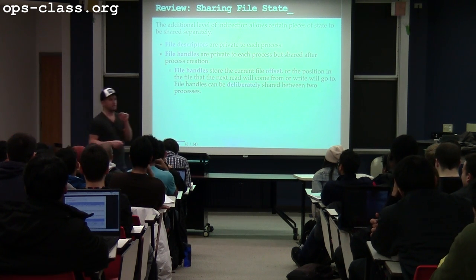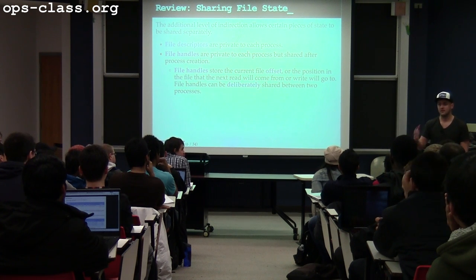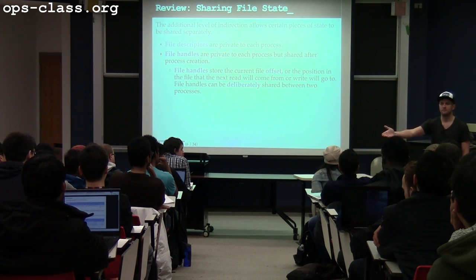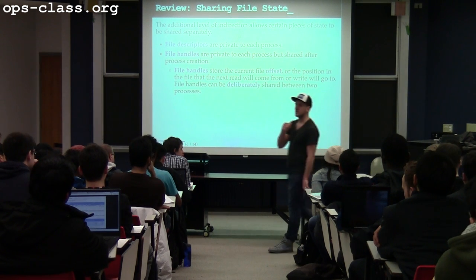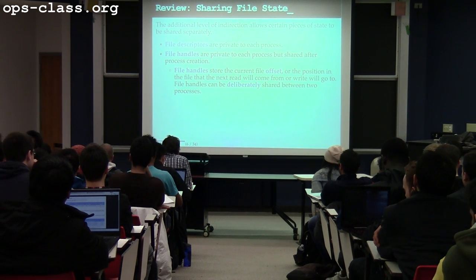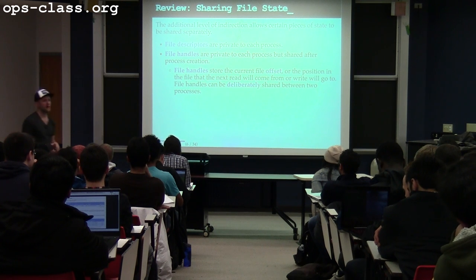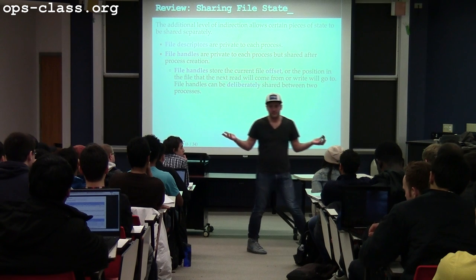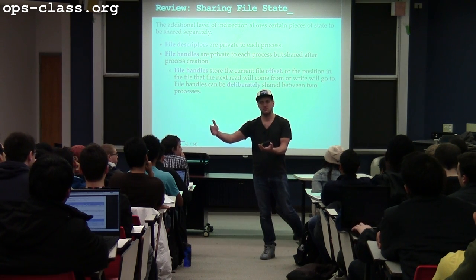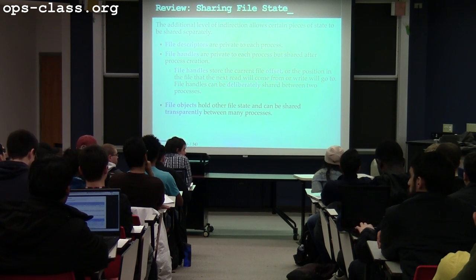There are ways to position the file pointer manually. You guys will work on this for Assignment 2. There's a system call called lseek, and lseek allows you to tell the kernel exactly where in the file you want your next file operation to go. If I want to read from or write to a particular byte of the file, I can use lseek to position the file pointer where I want it and then perform the operation. Normally, the file pointer is updated at the end of reads and writes to point to the end of the operation. So if I read 256 bytes from position 256 in the file, where does the file pointer end up? 512.